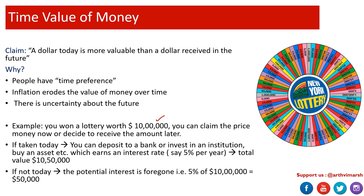Assume that you won a lottery worth one million dollars, and you can claim the prize money now or decide to receive the amount later. If you decided to claim the prize today, you could take that one million dollars and save it in a bank account earning five percent interest per year. By the end of the year you would have one million fifty thousand dollars.